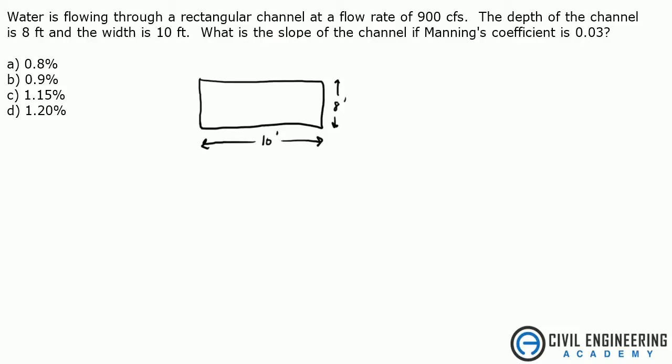It states water is flowing through a rectangular channel at a flow rate of 900 cubic feet per second, CFS. The depth of the channel is 8 feet and the width is 10 feet. What is the slope of the channel if Manning's coefficient is 0.03?